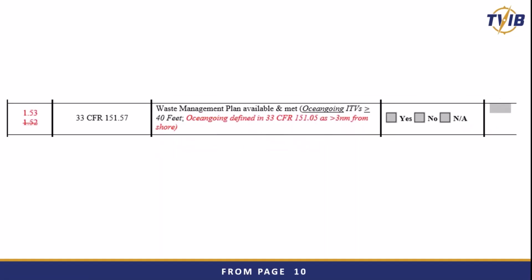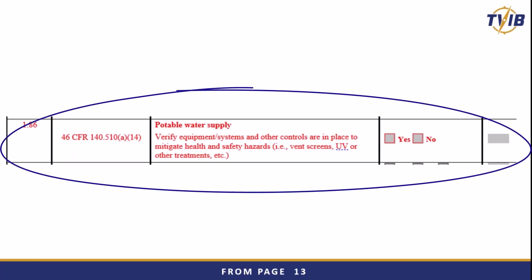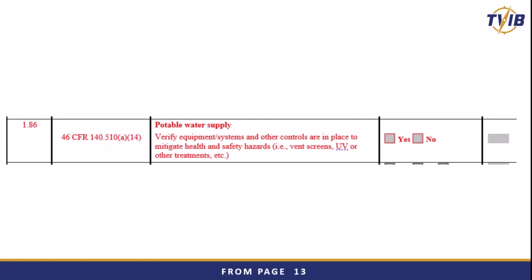The waste management plan — for oceans, we've added in the definition that it's greater than three nautical miles from shore. And then for potable water supply, we've added a citation. We've added that vent screens, UV, or other treatments are required. You may remember that within your TISMA, there has to be protective measures and safety measures to ensure your potable water supply is safe for drinking.